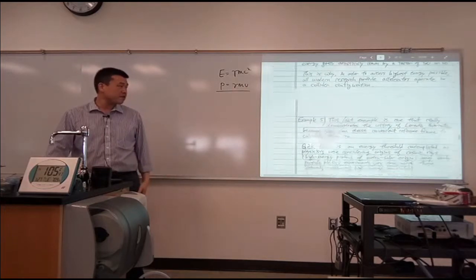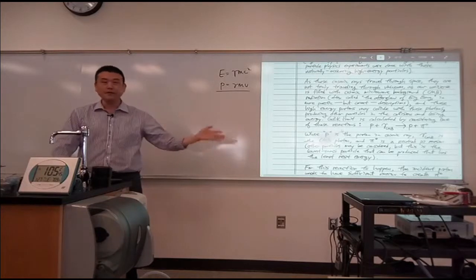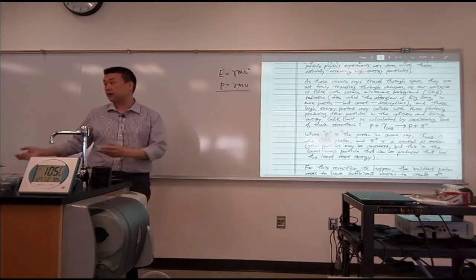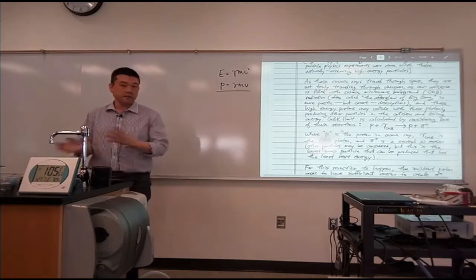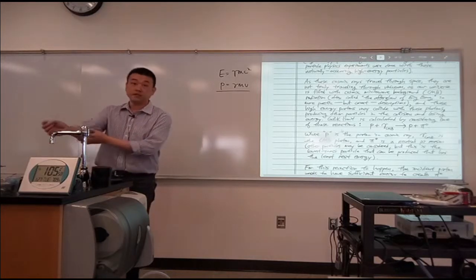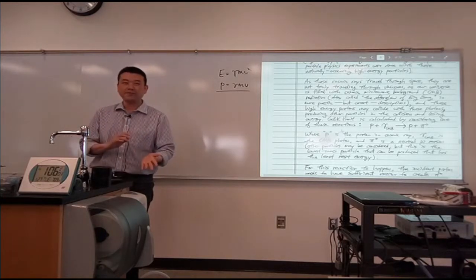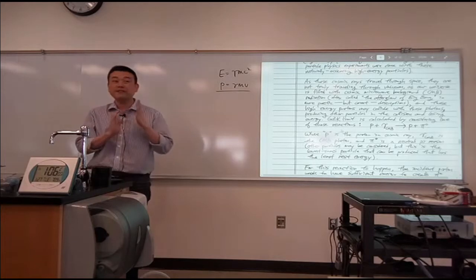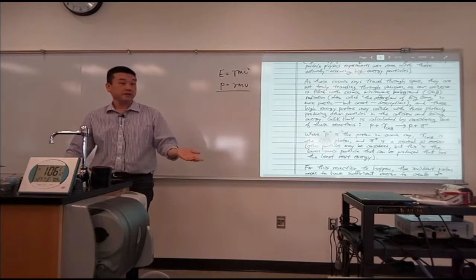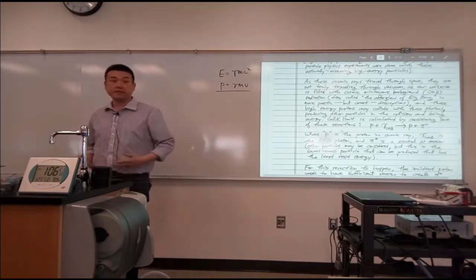When you do special relativity calculations, the number one thing I would say is try to avoid getting bogged down in algebra. If you're finding that you need pages of algebra to do a problem, chances are there's a better way. What you're doing - this is what I used to call a soft error in Physics 4A - you're doing something wrong, but not in any identifiable way. You're not making algebra mistakes, you haven't written anything wrong, except you're not getting towards the answer.